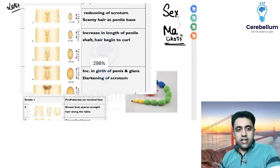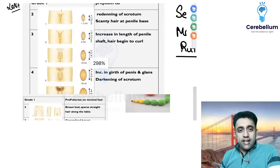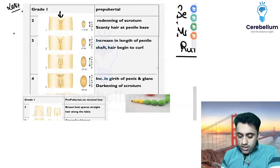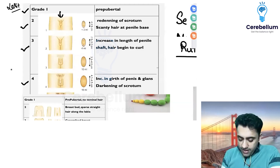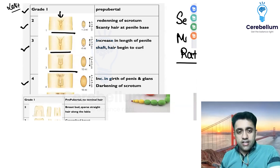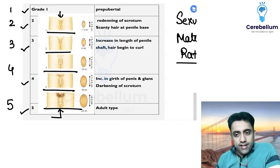The Tanner chart is the chart used in SMR staging. In SMR staging we have five stages: stage one, stage two, stage three, stage four, and stage five. These charts exist for both boys and girls to assess whether they are growing well.